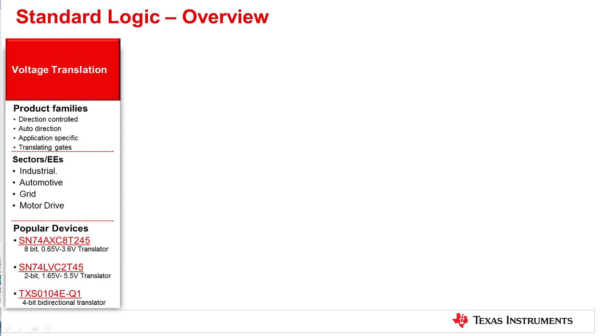Now, let's see the families in detail. Number one is the voltage translation. Underneath it, we have the direction control translation, auto bi-directional translation, application specific, and translating gate subfamilies. Some of the popular device families include TX TXS, TXB, AVC, LVC, and the newly released AXE family.